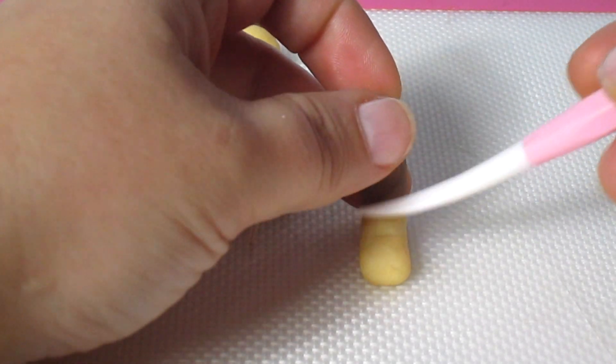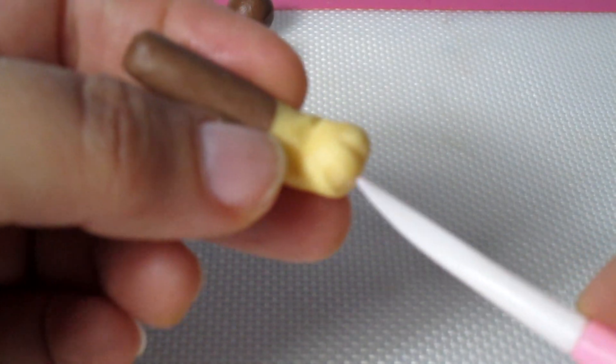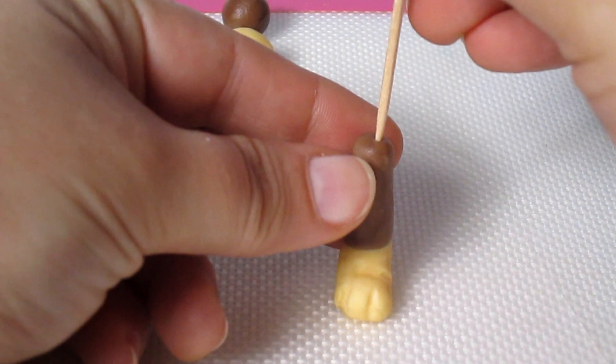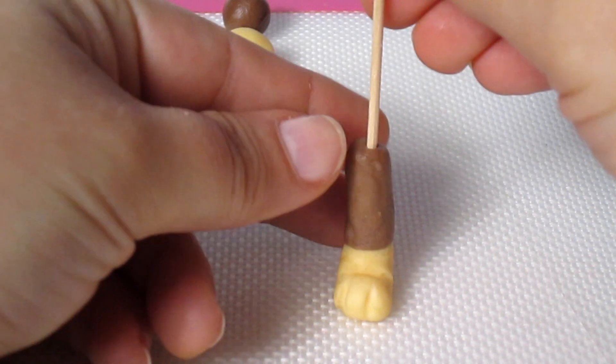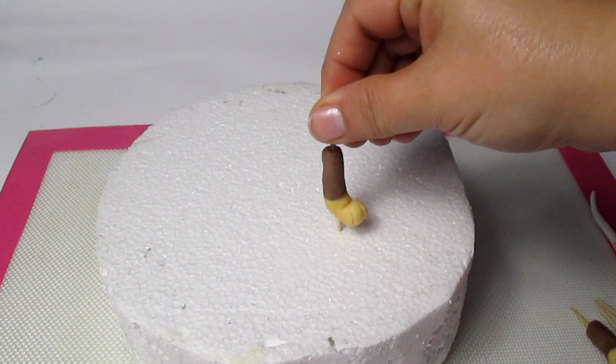Bend it to create the foot and then draw the spaces between the fingers. Gently insert a cocktail stick so they can stay still on the cake and do the same three more times.